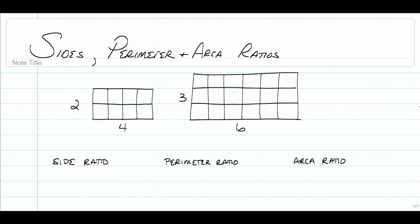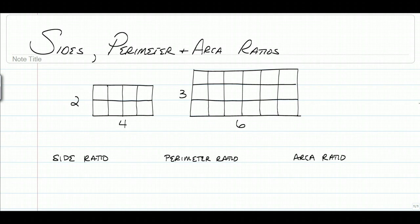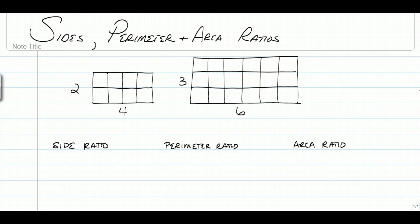So the first thing we're going to do is recap on what we know about similar figures. All the angles are going to be the same, but the ratio of sides must be the same from one figure to the next. So if we look at the ratio of sides, let's do that first.